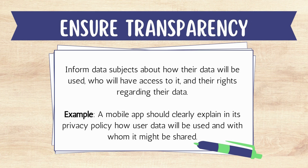Ensure transparency: inform data subjects about how their data will be used, who will have access to it, and their rights regarding their data. For example, a mobile app should clearly explain its privacy policy, how user data will be used, and with whom it might be shared.